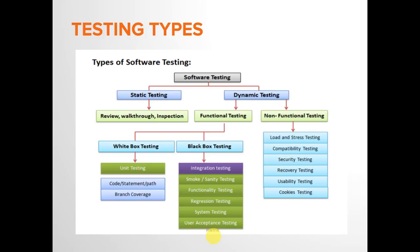This is followed by User Acceptance Testing, where the stakeholder performs testing to make sure the application passes the acceptance criteria. There are two types of UAT: alpha testing, which is done in the testing environment by testers, and beta testing, which is done in the live environment by end users. You may have seen applications with a 'beta version' label — that means it is deployed live for end users to use and provide feedback and report bugs.